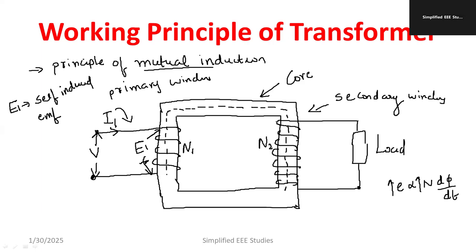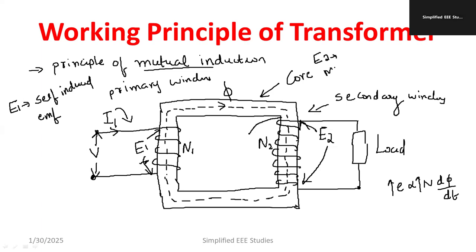Whatever flux is generated at the primary will interact with the secondary. As a result, flux changes take place at the secondary. Due to the change in flux linkage, an induced EMF is generated at the secondary — called E2. This E1 is called self-induced EMF, while E2 is called mutually induced EMF. That is why the working principle of transformer is called mutual induction.